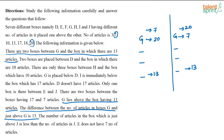So we have two cases. Case 1: G is 20 and the box on top of G is 7. Case 2: G is 7 and the box on top is 20. In the arrangement so far, we have placed 5 boxes — the box above G, G itself, and three others including the 13-article box. Two more boxes remain to be placed.